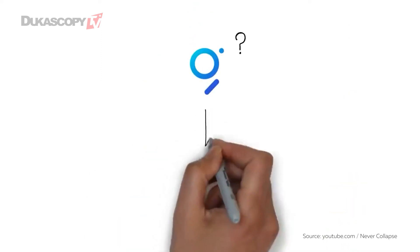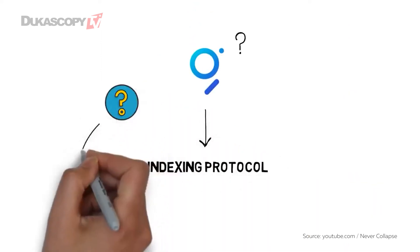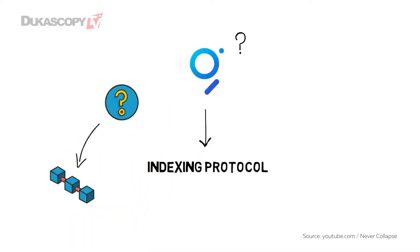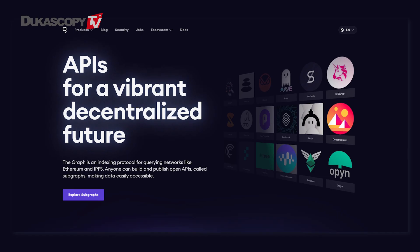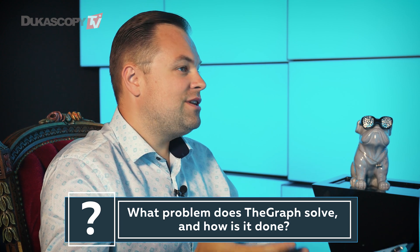Hello, today with us we have Kyle Rojas, who is working on The Graph, an indexing protocol for querying networks like Ethereum and IPFS, a distributed system for storing and accessing files, websites, applications, and data. Kyle, thank you so much for joining in and finding the time out of your schedule to have a quick chat with us. Jumping in with the first question: what problems does The Graph solve and how is it done?